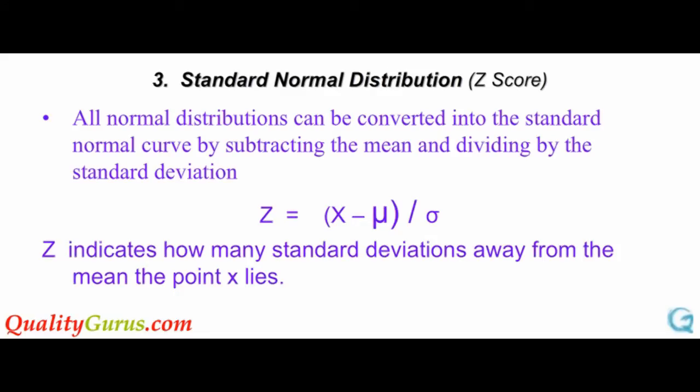The standard Normal Distribution is a special Normal curve made up of z-scores. A z-score is a standard score that is calculated by subtracting the mean from a value and dividing the result by the standard deviation. A z-value is used to express the number of standard deviations in the difference between the value and the mean.